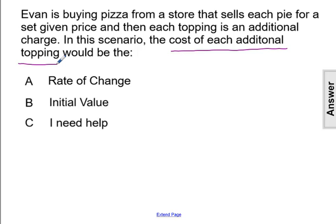The final cost you'll have to pay at the store — the pizza base price — is the initial value, the initial charge. But each topping is an additional charge, so that's changing the final cost of the pizza. It changes by the cost of each additional topping depending on how many toppings you get.